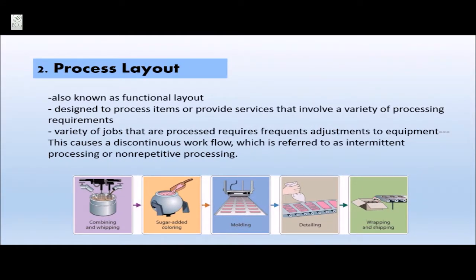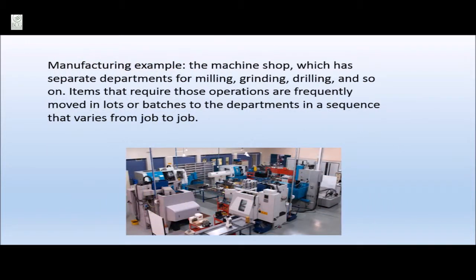The second type of layout is called process-oriented layout, also known as functional layout, which is designed to process items or provide services that involve a variety of processing requirements. The variety of jobs processed requires frequent adjustments to equipment, causing a discontinuous workflow referred to as intermittent or non-repetitive processing. A manufacturing example is the machine shop, which has separate departments for milling, grinding, drilling, and so on. Items that require those operations are frequently moved in lots or batches to departments in a sequence that varies from job to job.